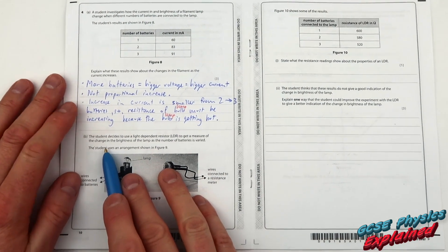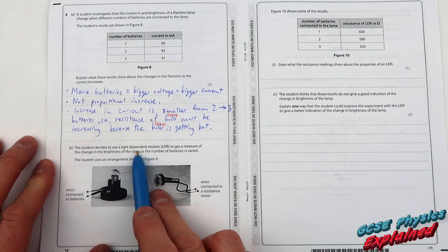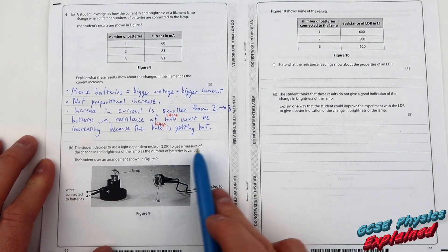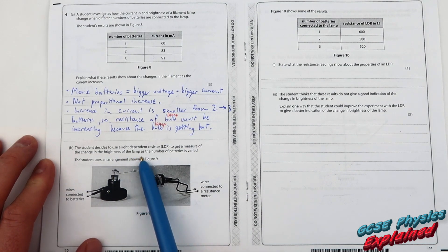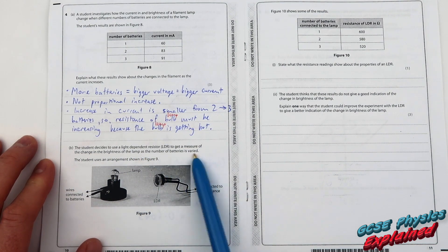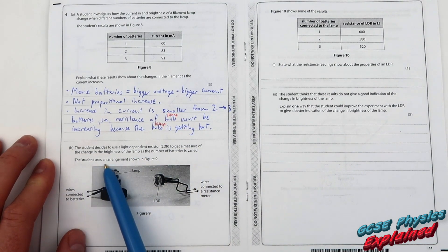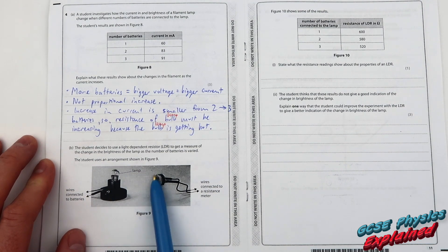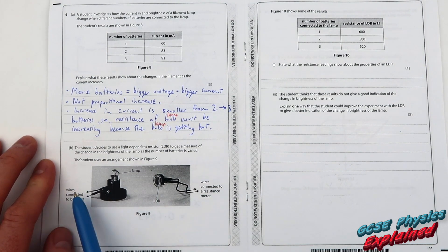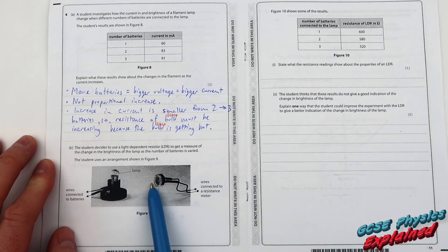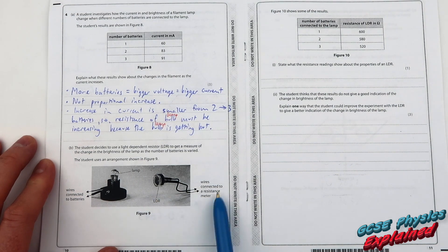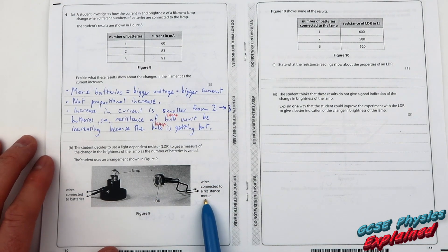Part B. The student decides to use a light-dependent resistor, LDR, to get a measure of the change in the brightness of the lamp as the number of batteries is varied. The student uses an arrangement shown in figure 9. So he's got the wires connected to the battery, so the lamp is pretty close to the LDR. And those wires are connected to a resistance meter.